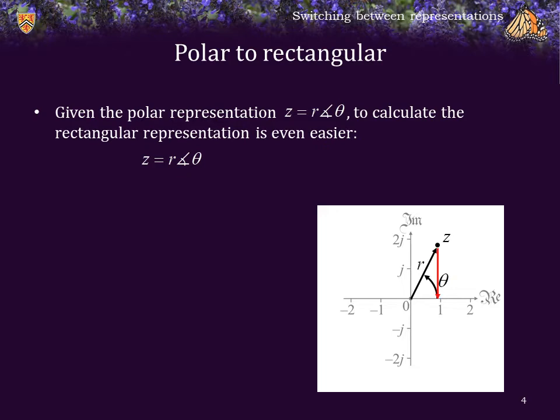What we have to do is figure out what is the projection of z onto the real axis. But wait a second. From trigonometry, you know that that's just r cosine theta. The projection onto the imaginary axis is just sine theta, so the imaginary component times j will be just r sine theta times j.